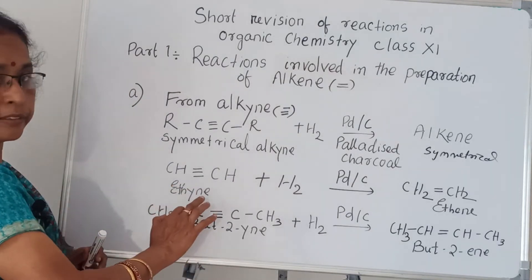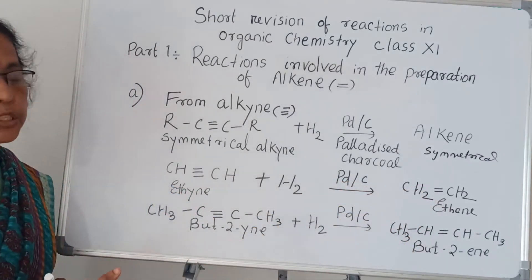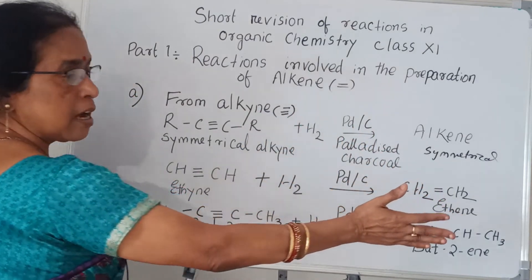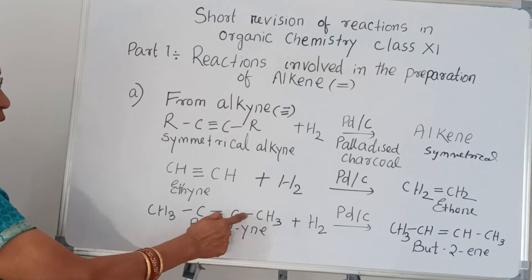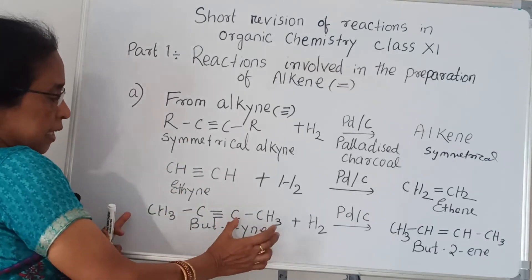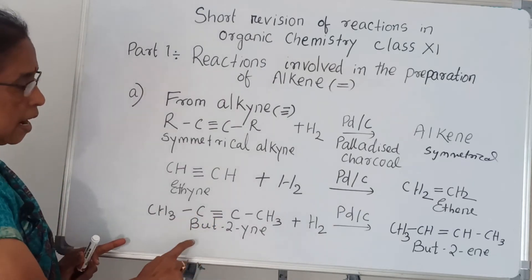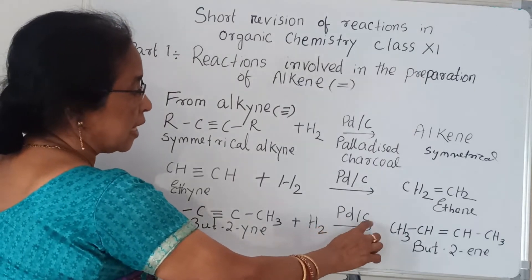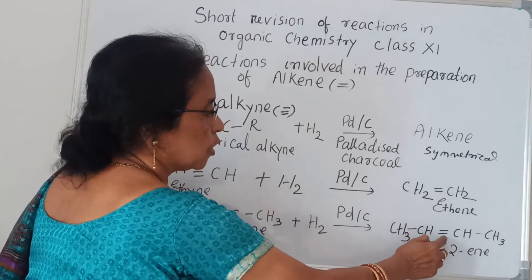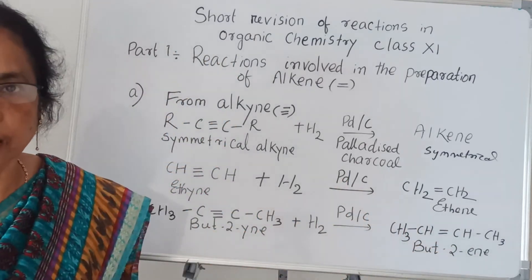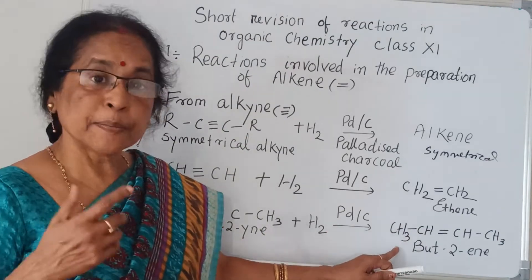If you take ethyne — which is symmetrical — plus hydrogen in the presence of palladium and carbon, it gives CH₂=CH₂, that is ethene. Ethene is also a symmetrical alkene. Then consider but-2-yne: after position two there is a triple bond. On the right side you find two carbons and three hydrogens, and similarly on the left side also two carbons and three hydrogens. With palladium charcoal and hydrogen you get but-2-ene, which is also a symmetrical alkene with two carbons and four hydrogens on each side.